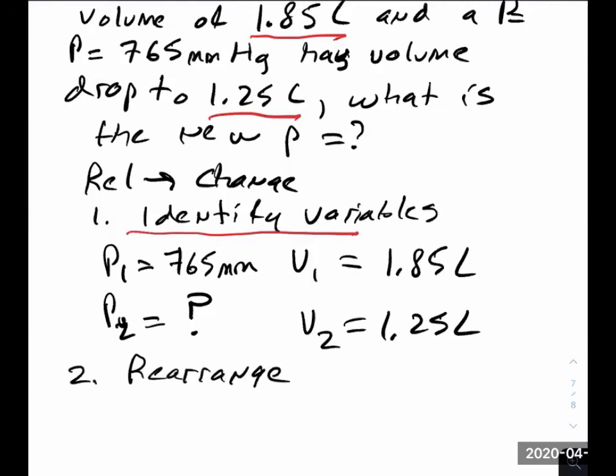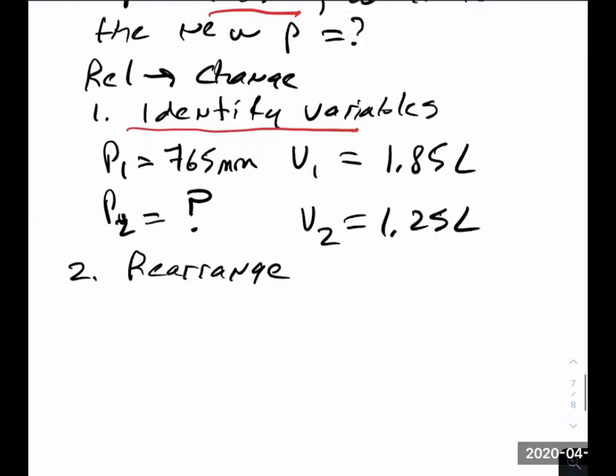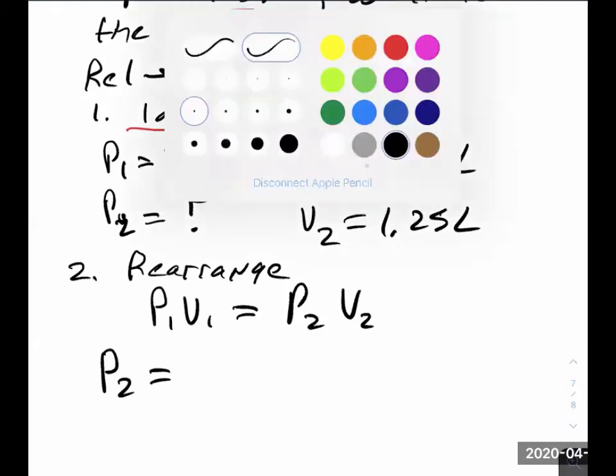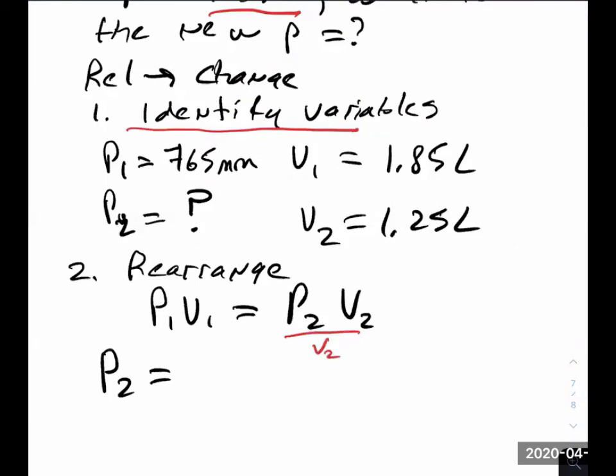The second thing to do is to rearrange. I would recommend this. A lot of people, they'll just plug the variables in and then solve. But I would actually recommend, why don't you rearrange it when it's variables? If P1V1 is equal to P2V2. I want to, what's P2 equal to? So how would I get P2? Divide V2 into both sides? Yes. I'm going to divide both sides by V2. That's absolutely correct. And that's my new expression. So P2 is equal to P1V1 over V2.